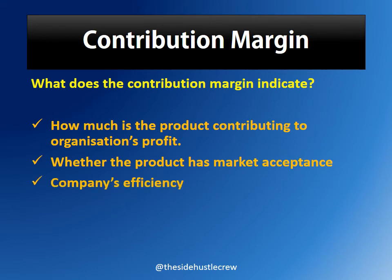Lastly, it talks about the company's efficiency. Contribution margin shows how well a company has utilized its resources. A subpar contribution figure is an indication of lack of efficiency in terms of utilizing material and labor. If the company is not utilizing material and labor efficiently, the variable costs will be high, which in turn will bring down the contribution figure.